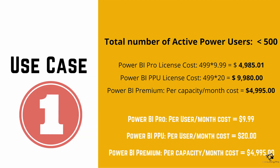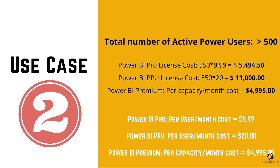Now let's talk about deciding based on number of users. If your users are fewer than 500, Power BI Pro license costs around $4,900, PPU comes to about $10,000, and Premium is $4,995 — so you can compare and decide. However, remember that any Power BI developer who publishes reports to Power BI Service or makes changes to semantic models must also have a Power BI Pro license. When your total active users exceed 500, Power BI Premium becomes much more suitable, though it also depends on load.